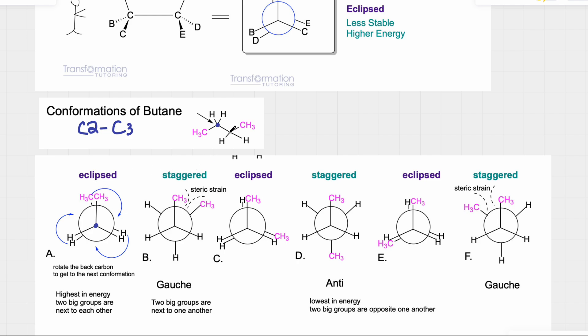Then we look at carbon number 3, which is the back carbon. What groups is carbon number 3 attached to? Two hydrogens and a methyl. In this case I'm putting methyl here and hydrogens here. You can put them anywhere you want as long as you draw all of the conformations, if that's what the question is asking — you can start anywhere you'd like.